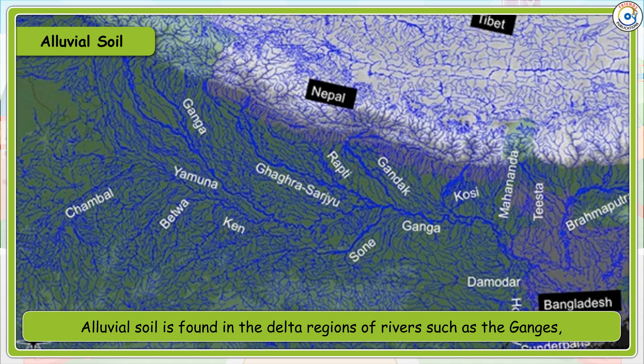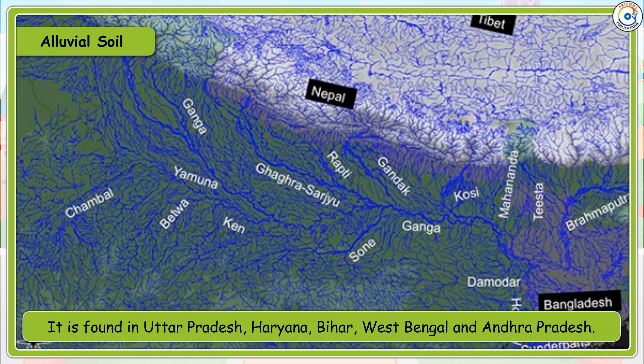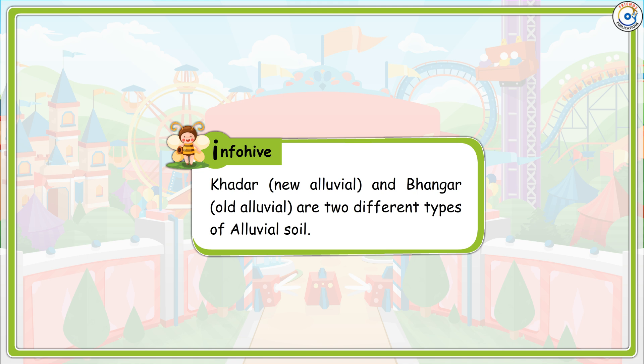Alluvial soil is found in the delta region of rivers such as the Ganges, the Godavari, and the Kaveri. It is found in Uttar Pradesh, Haryana, Bihar, West Bengal, and Andhra Pradesh. Khadar (new alluvial) and Bhangar (old alluvial) are two different types of alluvial soil.